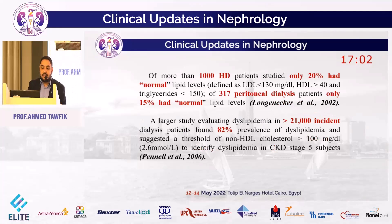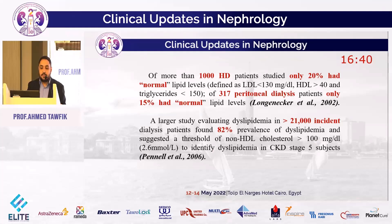A study on 1,000 hemodialysis patients found that only 20% had normal lipid levels, defined as LDL below 130 mg/dL, HDL more than 40, and triglycerides less than 150 mg/dL. In 317 peritoneal dialysis patients, only 15% had normal lipid levels. A larger study of more than 21,000 incident dialysis patients found a 28% prevalence of dyslipidemia, using a threshold of non-HDL cholesterol over 100 mg/dL to identify dyslipidemia in CKD stage 4.